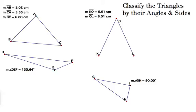We're going to talk about triangles, and first we're going to classify them. We're going to classify them by their angles and by their sides — they've got two classifications. The angle classifications are acute, obtuse, and right.